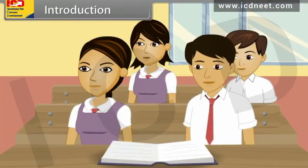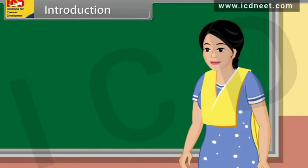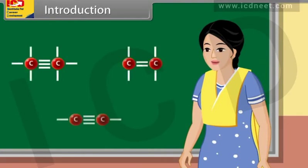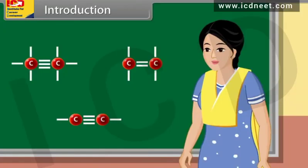Teacher, how are carbon-carbon atoms attached? The carbon-carbon atoms are attached by single bond, double bond, or triple bond, and the functional group present on the organic compound decides its chemical nature. Teacher, what is a functional group? It is a group of atoms in an organic compound responsible for the chemical reactions of that compound. In this lesson, you will learn organic chemistry and some basic principles.